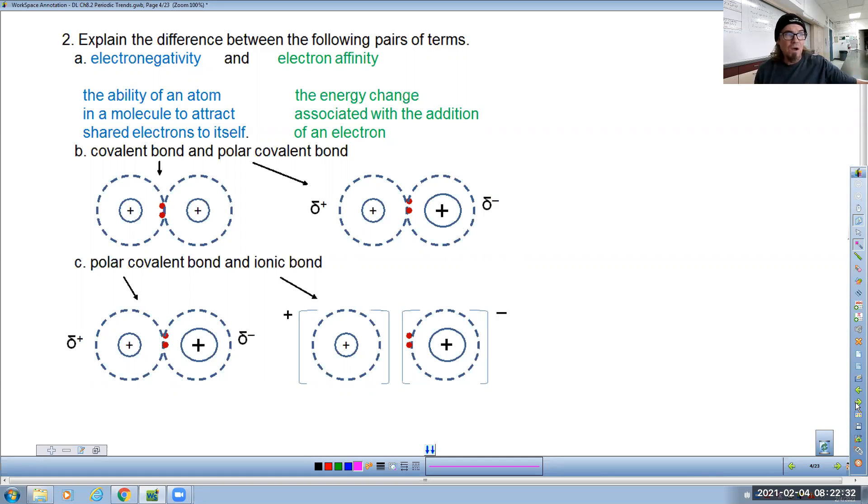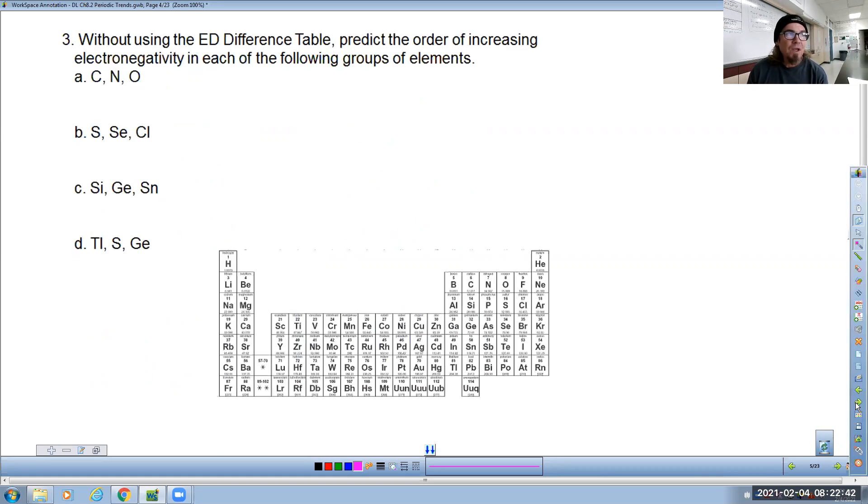Here's some nice pictures to show you what it is I was talking about. Question number three, without using the electronegativity difference table, predict the order of increasing electronegativity in each of the following groups of elements. So this is just us looking at which one has the highest electronegativity. This pretty easy question. So for carbon, nitrogen, and oxygen, we recognize that it increases as you go to the right, but you can't just say that. You have to say it is a periodic trend that electronegativity increases as you go across a period. Now you get full credit.